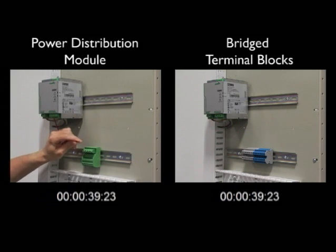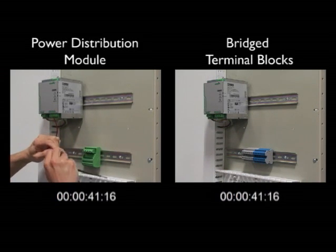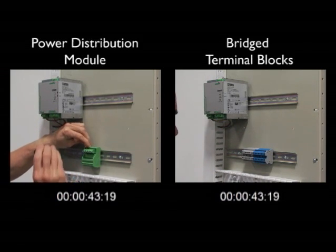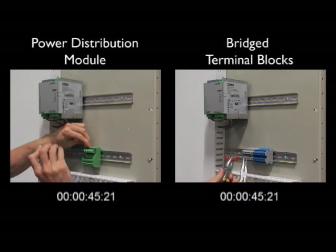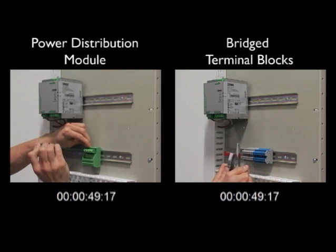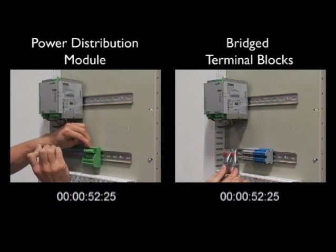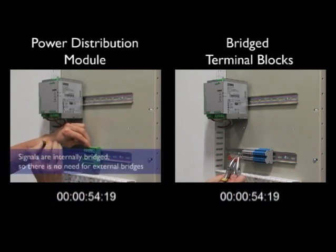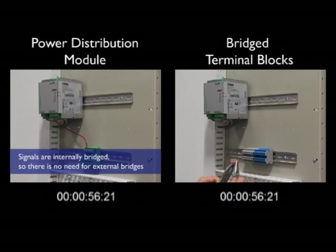As the installer on the left begins landing signal wires, the installer on the right now begins measuring and cutting push-in terminal block bridges that will be used to supply voltage to each group of terminal blocks. This step is skipped when using the power distribution module since all bridging is done internally on the printed circuit board.